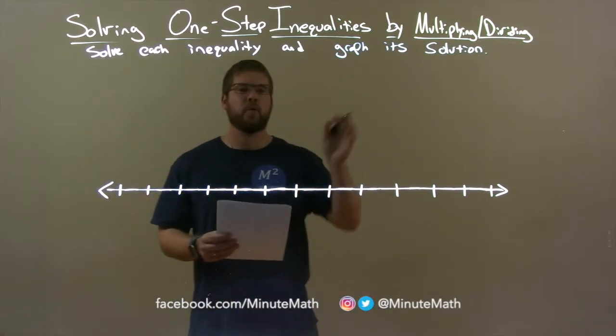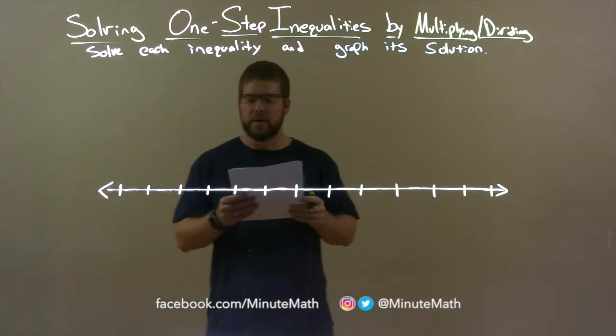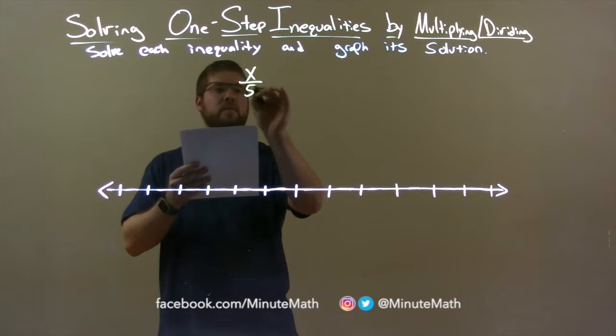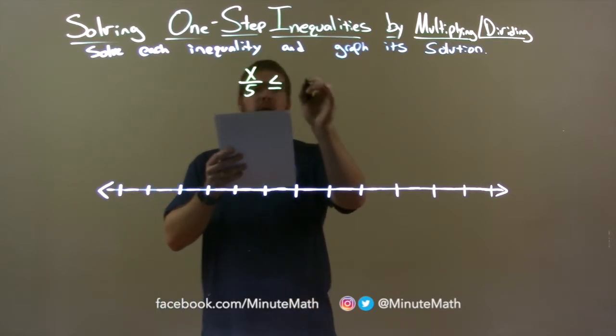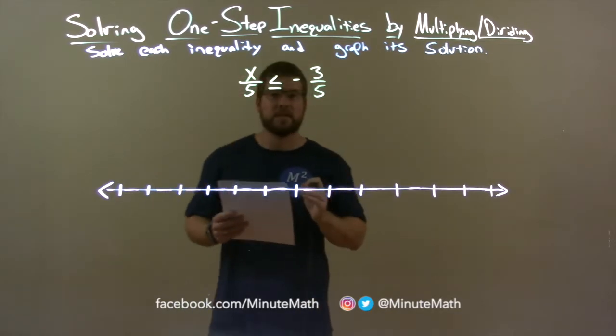Solve each inequality and graph its solution. Now, if I was given this inequality, x over five is less than or equal to negative three-fifths, I want to get x by itself.